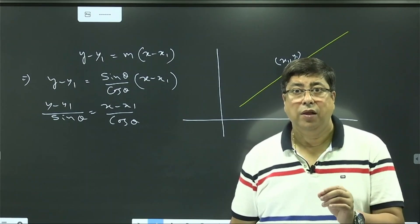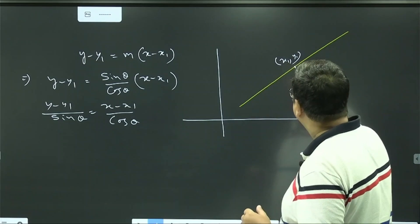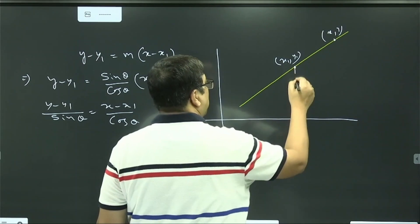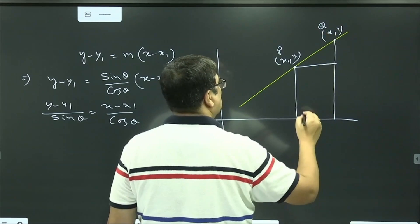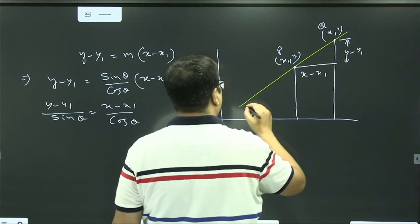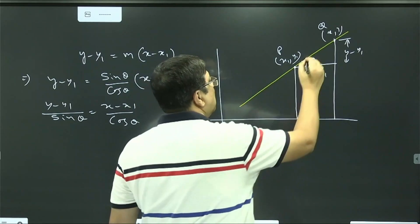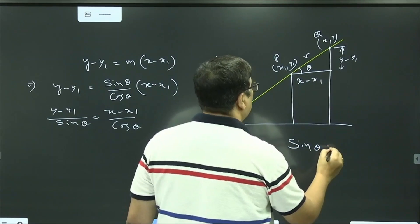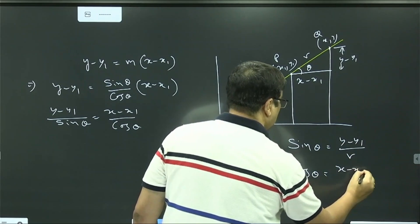The straight line passes through the fixed point. We can find (x, y) and any other point. Let me drop a perpendicular. This point is P and this point is Q. This is x minus x1, and this is y minus y1. This is the slope and this is inclination theta. That means P and this point is R, so sin theta.